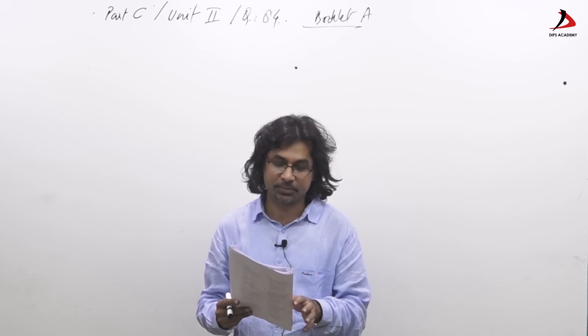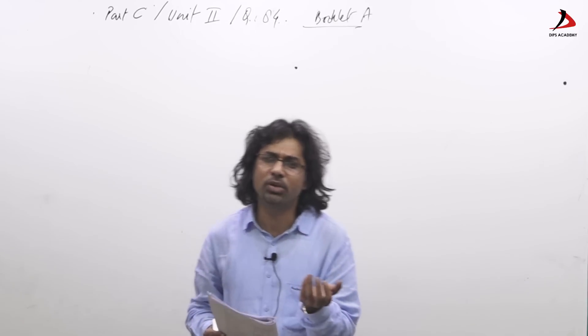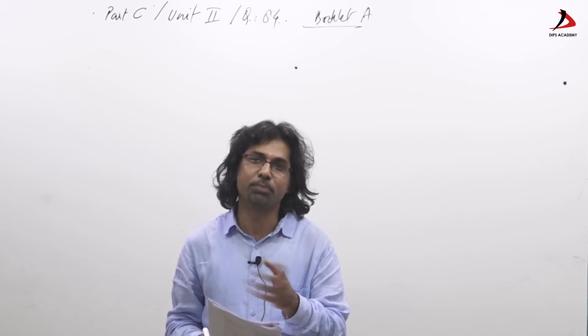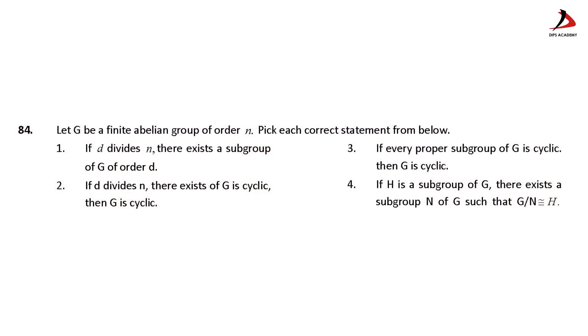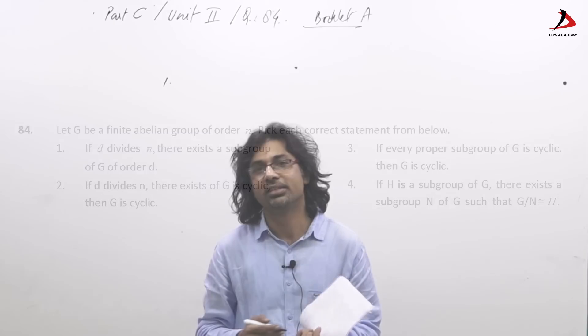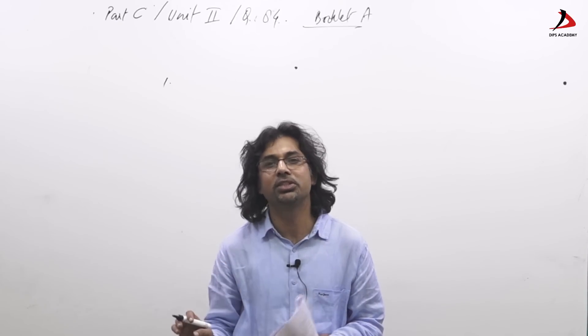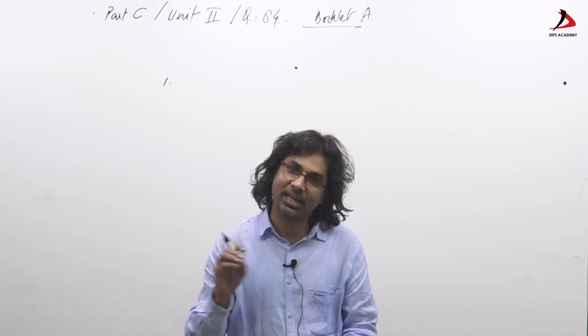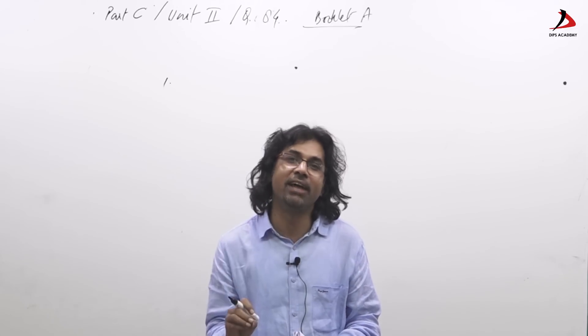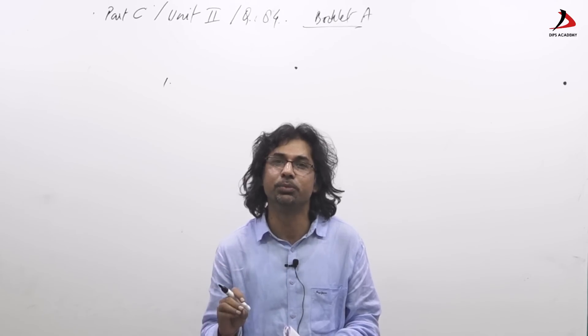If we have idea about abelian groups which are finite and their properties, the question itself reads out its option as an answer. The first option says if d divides n then there exists a subgroup of g of order d. We have a standard result: converse of Lagrange's theorem is true for finite abelian group. That means for every divisor of the order of group where g is finite abelian group, there exists a subgroup.